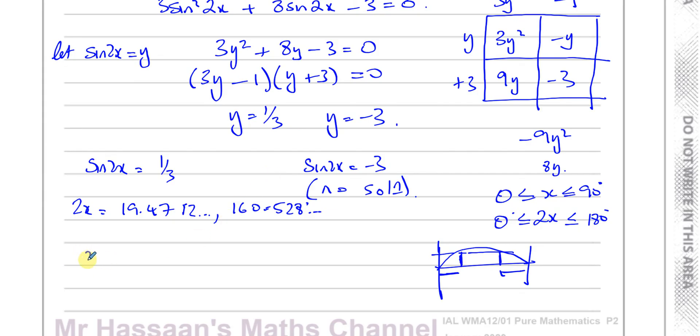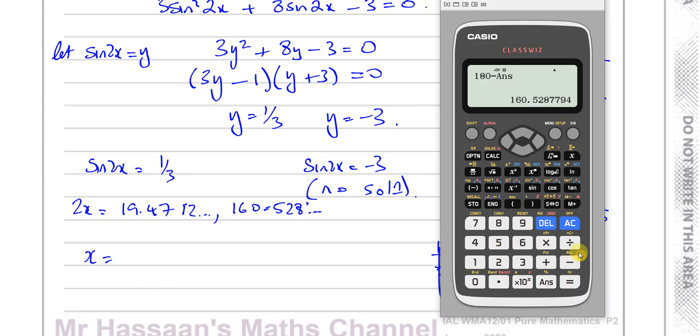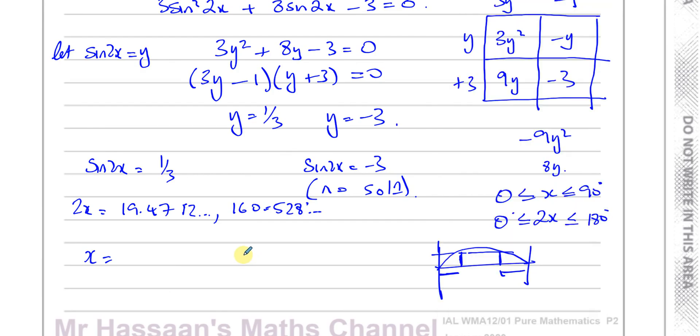And x is going to be half of these angles, because this is 2x. So we've got to take these angles and divide them by 2, so I'll divide this by 2, and that gives me 80.26, two decimal places, that's 80.26.